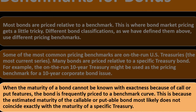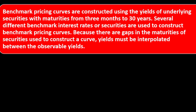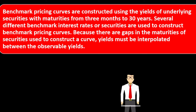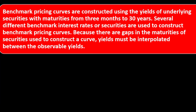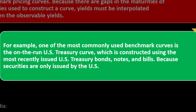When the maturity of a bond cannot be known with exactness because of call or put features, the bond is frequently priced to a benchmark curve, because the estimated maturity of the callable or putable bond most likely does not coincide exactly with a specific treasury benchmark. Pricing curves are constructed using the yields of underlying securities with maturities from three months to 30 years. Because there are gaps in the maturities of securities used to construct a curve, yields must be interpolated between the observable yields.